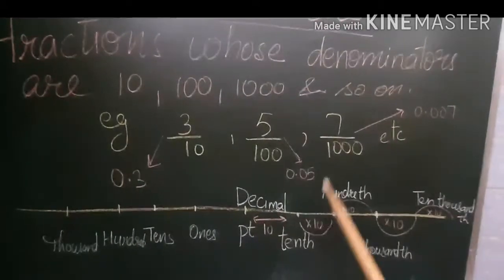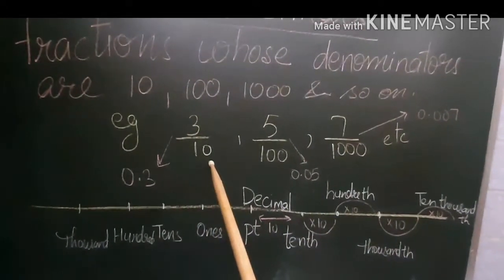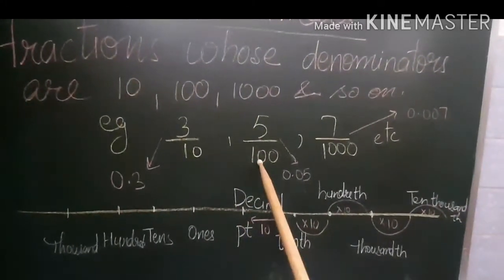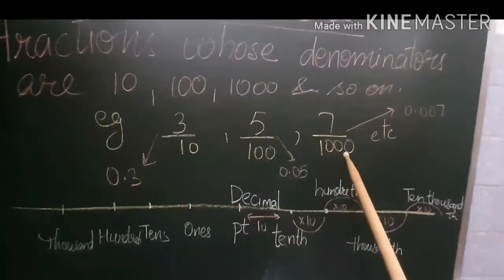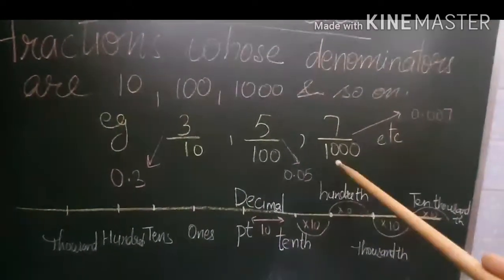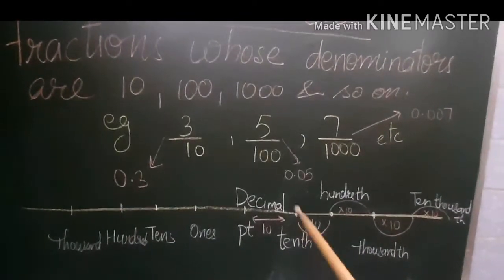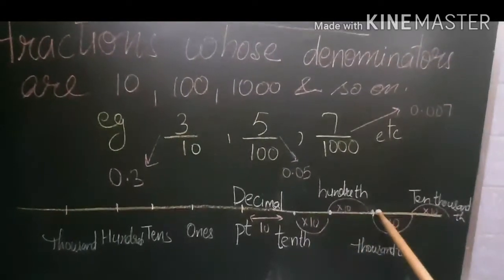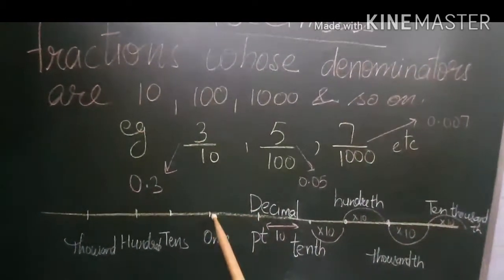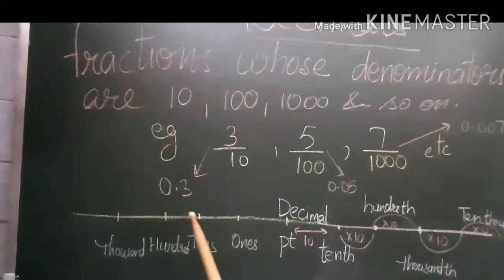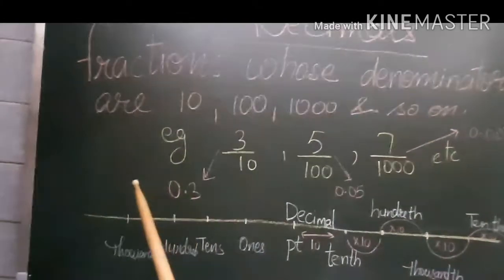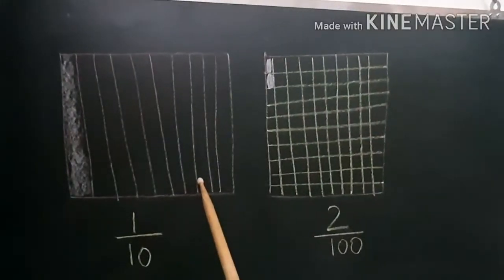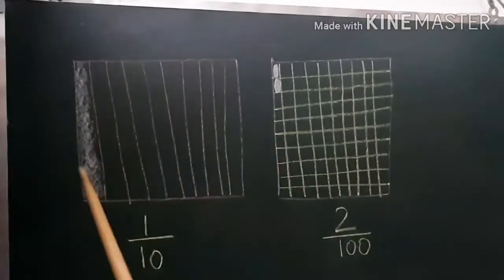With each step on the number line we multiply by ten. Tenths to hundredths is ten steps; ten tens make a hundred. Hundredths to thousandths is again ten steps. So moving forward on either side, there is always a difference of ten steps between each place value.